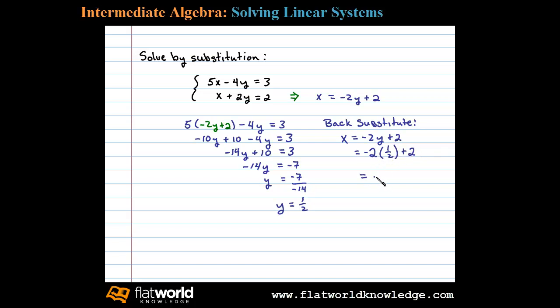Negative 2 times one half is negative 1. Negative 1 plus 2 gives us 1, and that's the corresponding x value. So the answer here presented as an ordered pair is (1, 1/2). That's the simultaneous solution.